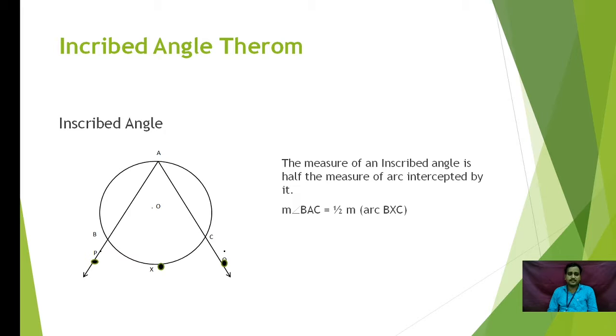Now let us understand the property which we are going to verify further. The measure of inscribed angle is half of the measure of the arc intercepted by it. Angle BAC is half of intercepted arc BXC. So we are going to prove this particular inscribed angle theorem with the help of two activities.